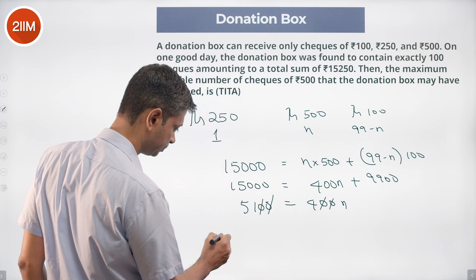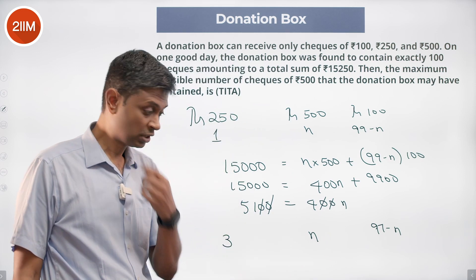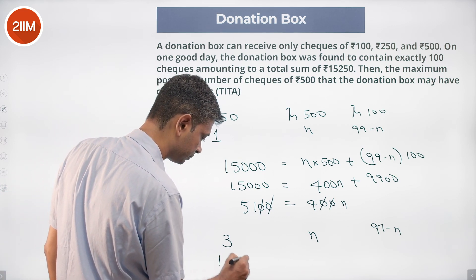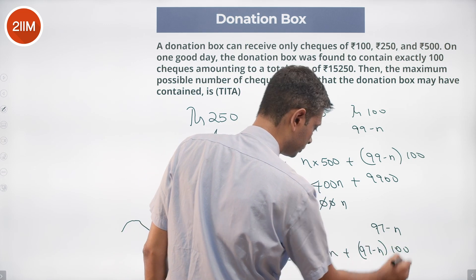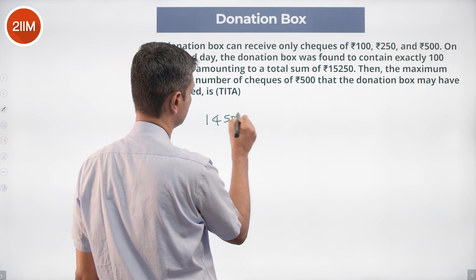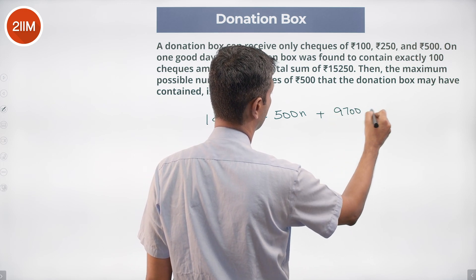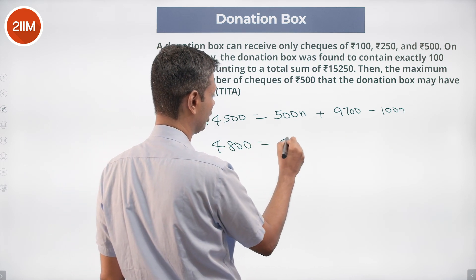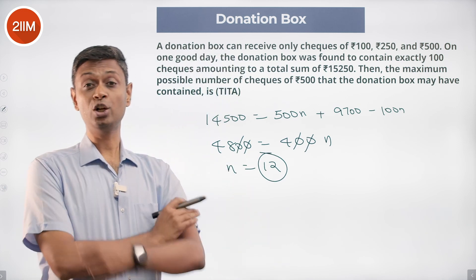Let's try three 250-rupee notes. We have n 500-rupee notes and (97 minus n) 100-rupee notes. Three 250-rupee notes total 750 rupees. So 15,250 minus 750 = 14,500 = 500n + (97 − n) × 100. Solving: 400n + 9,700 = 14,500, so 400n = 4,800, giving n = 12. This works! So we get 12 five-hundred rupee notes and 3 two-fifty rupee notes.